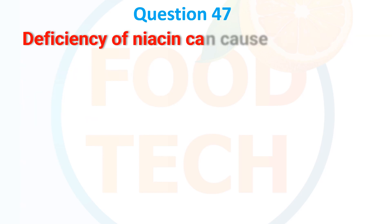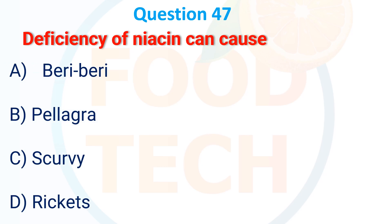Question 47. Deficiency of niacin can cause: A. Beriberi. B. Pellagra. C. Scurvy. D. Rickets. The correct answer is B: pellagra.